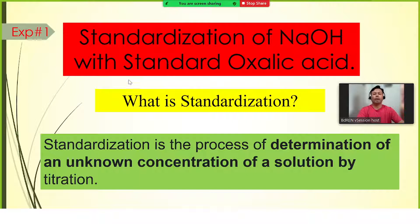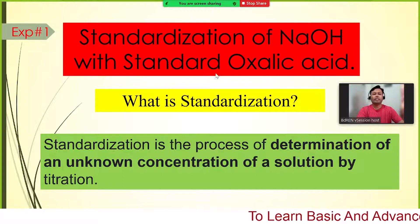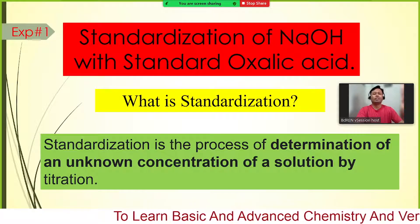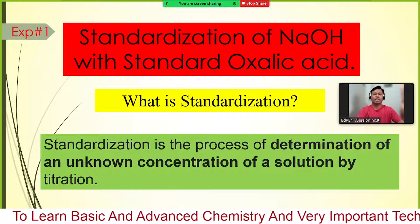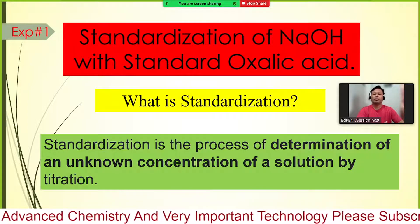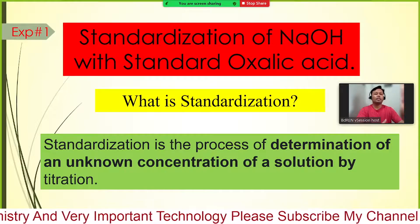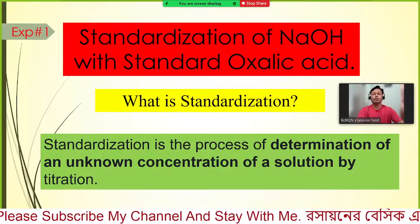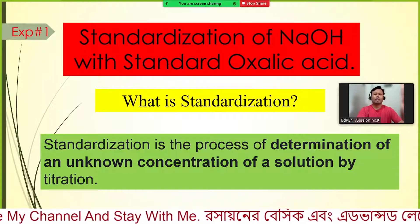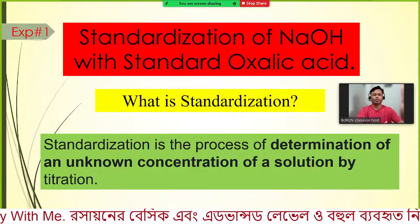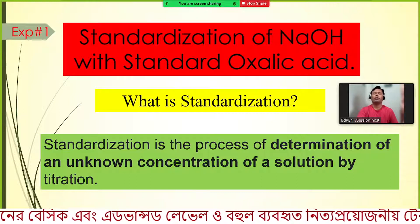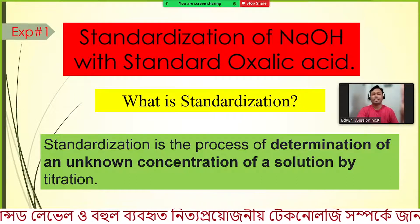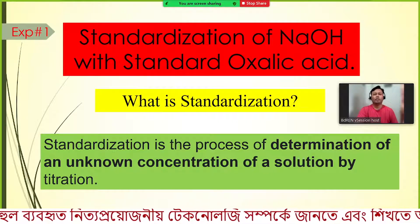You will determine the concentration of sodium hydroxide solution by reacting it with oxalic acid — a standard oxalic acid. A standard solution means you know the concentration, volume, and everything regarding that oxalic acid solution. So standardization of sodium hydroxide with standard oxalic acid means determining the concentration of sodium hydroxide using a known concentration of oxalic acid. To do this we use a titration or titrimetric method.